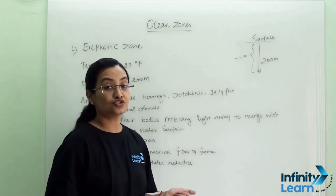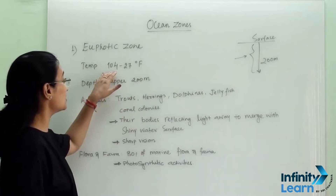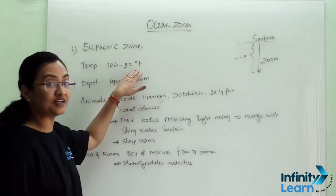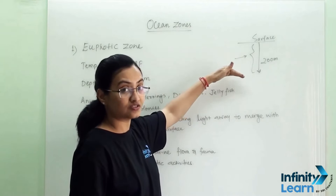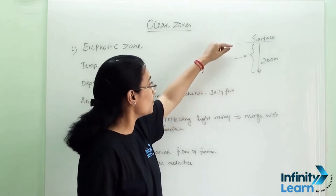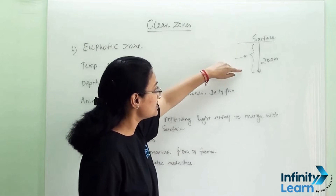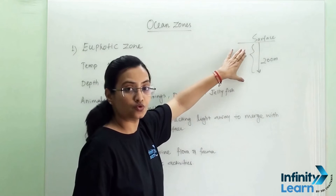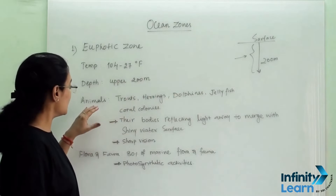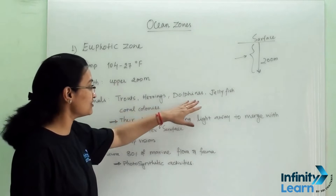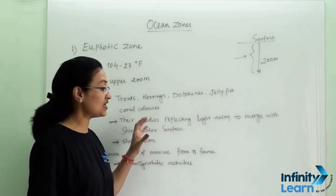Our first zone is the euphotic zone. The temperature here is 104 to 27 degrees Fahrenheit. As discussed, this zone starts from the surface and extends to 200 meters depth. The animals we can see in this zone are trout, herrings, dolphins, jellyfish, and some major coral colonies.